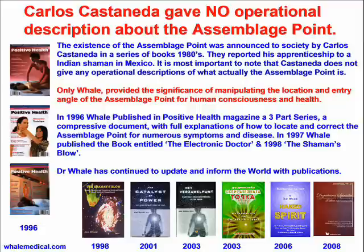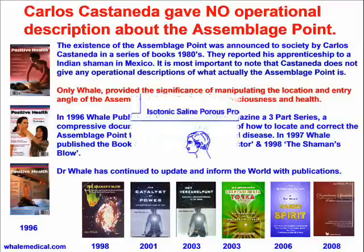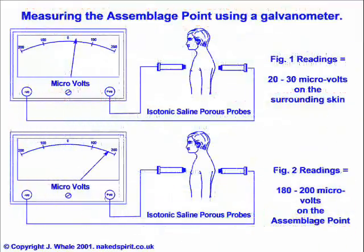For human consciousness and health, only Whale provides techniques for manipulating the location and entry angle of the assemblage point. He also gives an account of measuring the electrical potentials of the skin at the assemblage point location, finding a 5 times voltage differential when compared against the surrounding area.